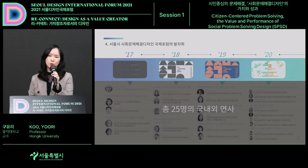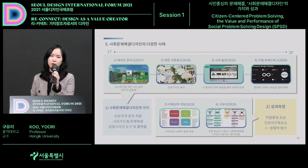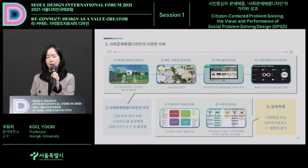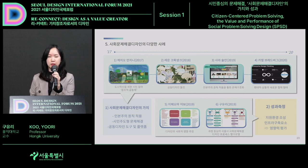Looking at the various presentations from 2017 to 2020, there were 25 speakers who spoke about social problem-solving design within their own contexts. Humanities related to design and utilizing shared platforms were discussed to show the value of social problem-solving design. I also want to talk about two cases related to assessment of value and performance, showing how the methodologies were actually implemented.